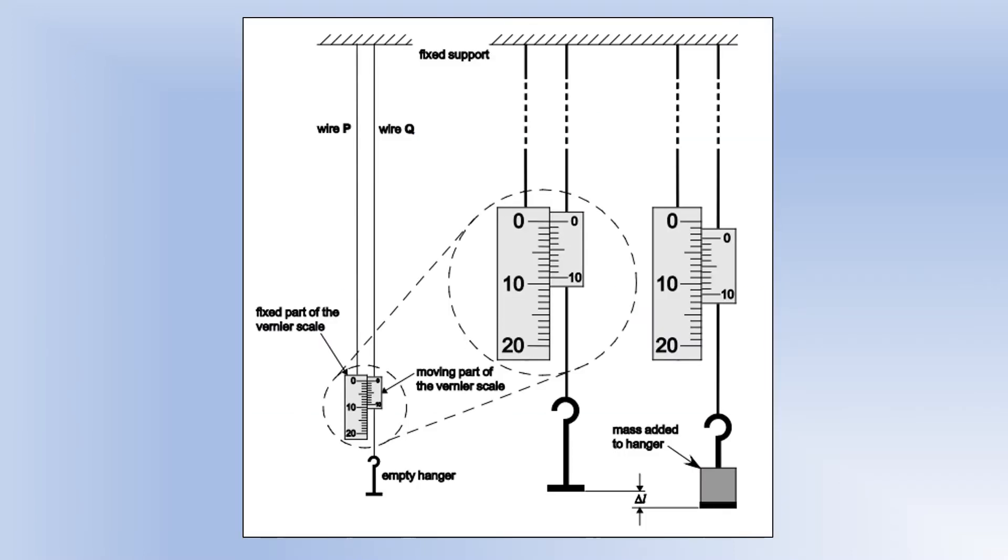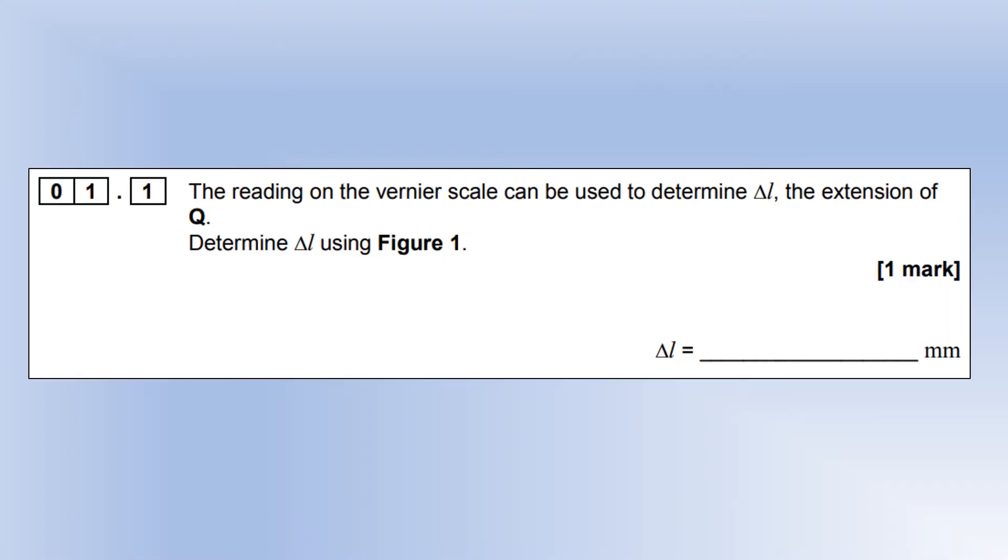Let's have a look at the diagram. The system looks like this: it started with the vernier scale at zero, and then once you've hung a mass on it we can see the vernier scale has gone down and we've got a new reading. The reading of the vernier scale can be used to determine delta L.